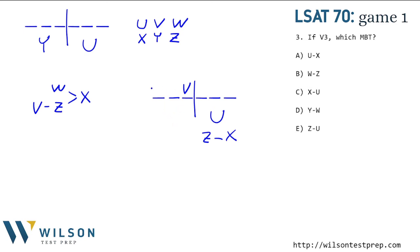So I'll put W and Y in spots one and two with a switch to show we don't know which is first. What has to be true? Does U have to be before X? No, U could be in the sixth spot. W before Z? Yes — Z can't be any earlier than four, and W can't be later than two, so W has to be before Z. X before U? No, X could be in the last spot. Y before W? Those could go in either order. Z before U? No, U could be in the fourth spot. So B — W before Z — is the only one that must be true.